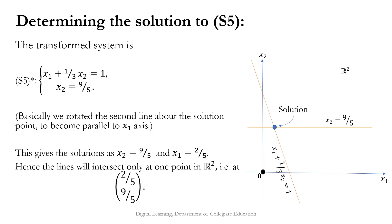Now let us determine the solution to system S5. The transformed system after reducing the augmented matrix to row echelon form is: x₁ + (1/3)x₂ = 1 and x₂ = 9/5. Geometrically, this means we rotated the second line about the solution point so that it becomes parallel to the x₁ axis. This gives the solution x₁ = 2/5 and x₂ = 9/5. The two lines in R² intersect at the single point (2/5, 9/5).